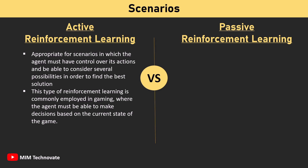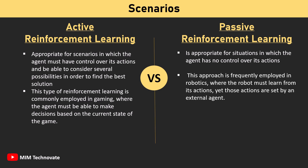Passive Reinforcement Learning, on the other hand, is appropriate for situations in which the agent has no control over its actions. This approach is frequently employed in robotics, where the robot must learn from its actions yet those actions are set by an external agent.